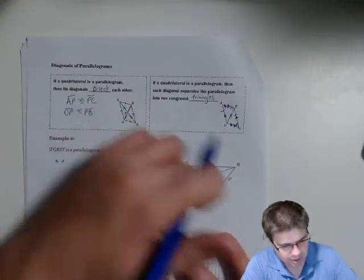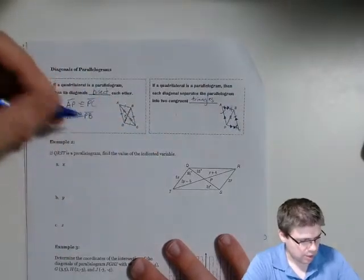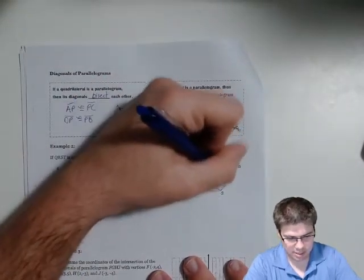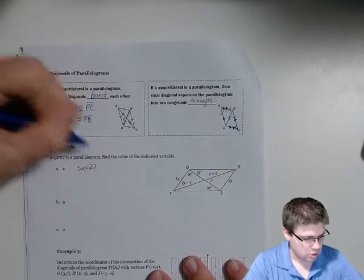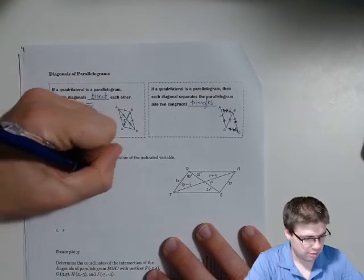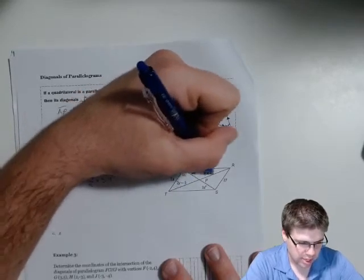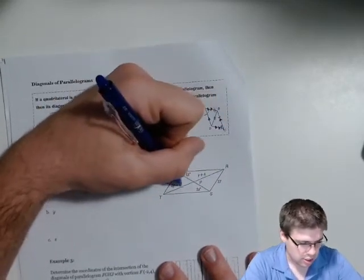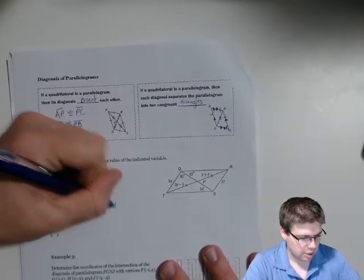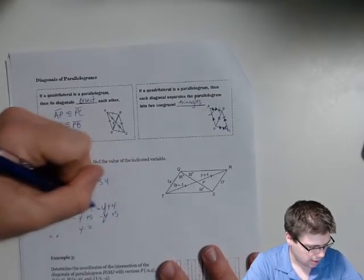With some of that new knowledge, we've got some diagonals in a parallelogram and they want us to find each variable. For 5x, I know it's going to be the same as 27, so 5x equals 27, meaning x is 27 over 5, which is 5.4. For y, since I know these segments bisect each other, I can say 2y minus 5 equals y plus 4, subtract y, add 5, and get y equals 9.